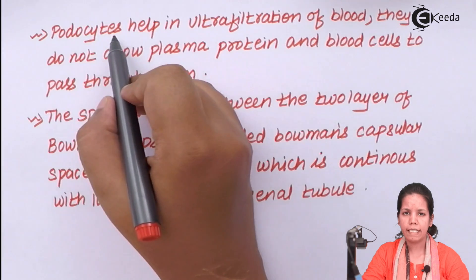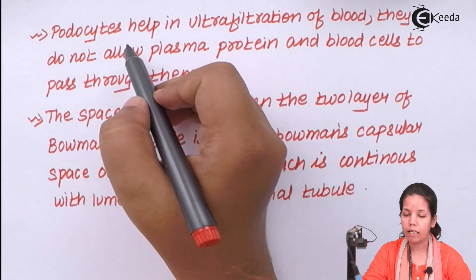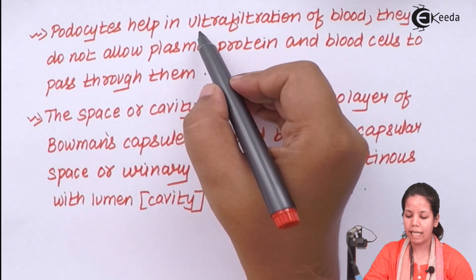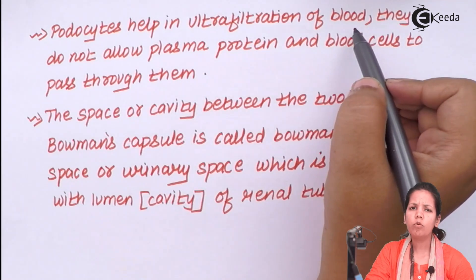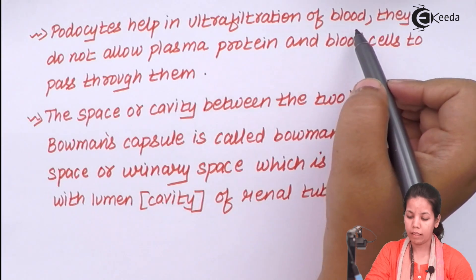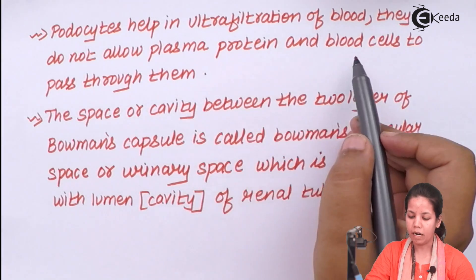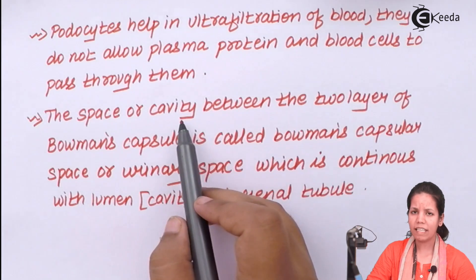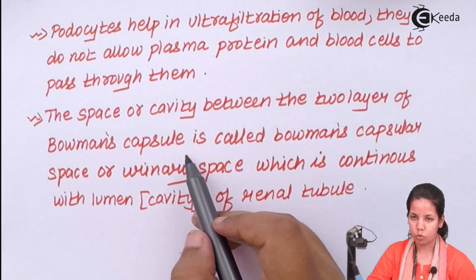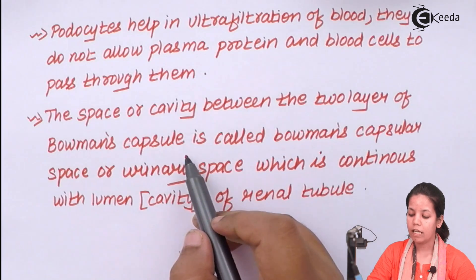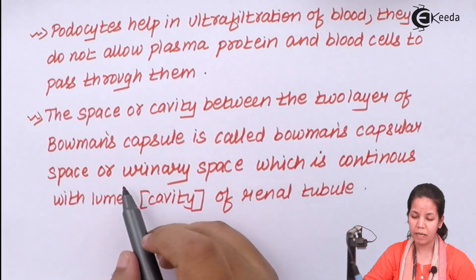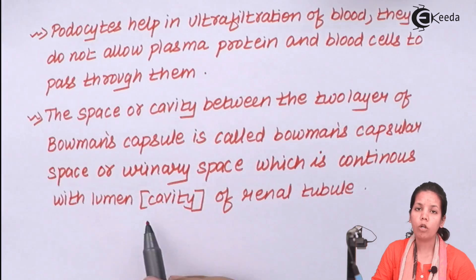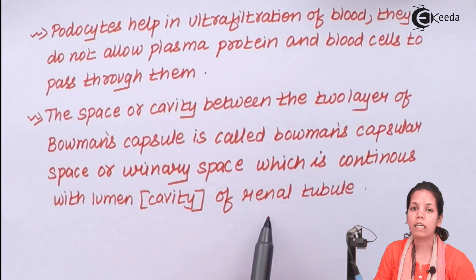The podocyte cells which form the inner lining of your Malpighian corpuscles or Bowman's capsule basically help in ultrafiltration of blood to remove unwanted substances from blood. They don't allow plasma proteins and blood cells to pass through them. The space or cavity between the two layers of Bowman's capsule is termed as the Bowman's capsular space or urinary space, which is continuous with the lumen cavity of your renal tubule.